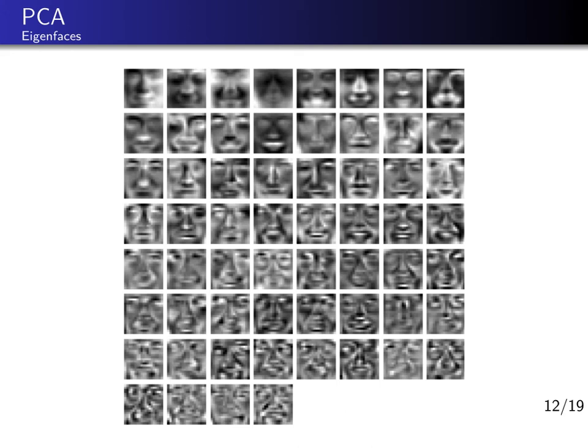With this, I want to wrap up the principal component analysis section and move to the next topic: autoencoders. We will use what we have learned in PCA to design a deep learning architecture using the loss functions we have seen here.